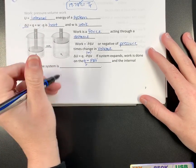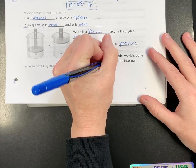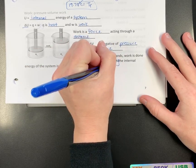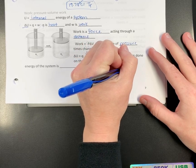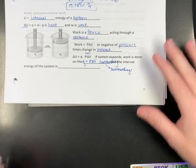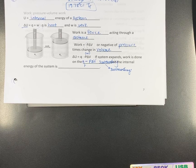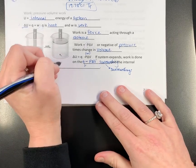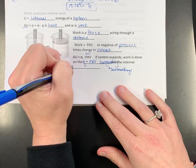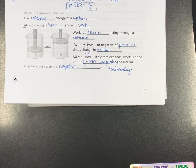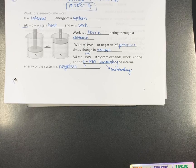If the system gets bigger, work is done on the surroundings. Work done by the system on the surroundings is negative. Work done on the system is positive. Heat leaving the system is negative. Heat gained by the system is positive. Prepositions matter.